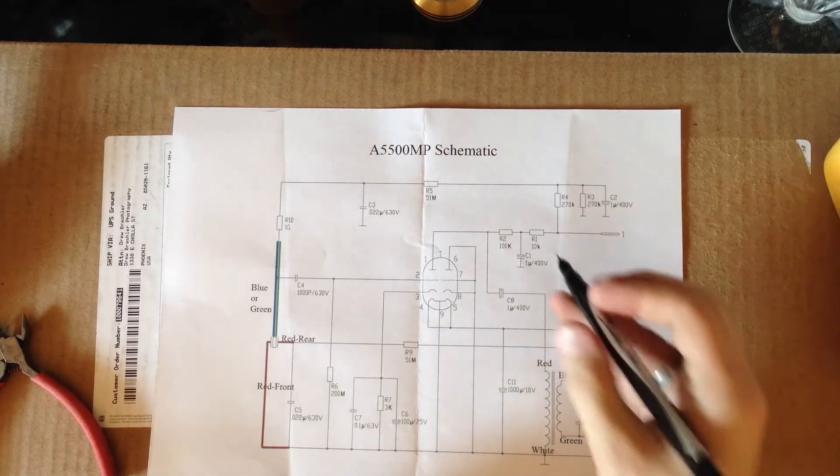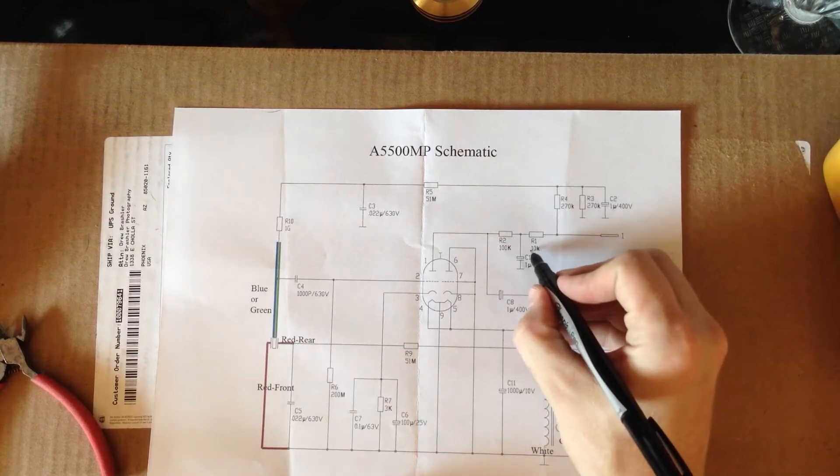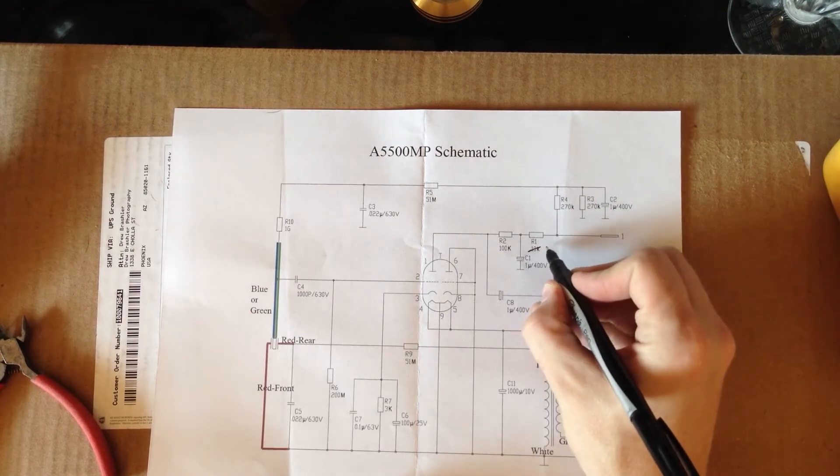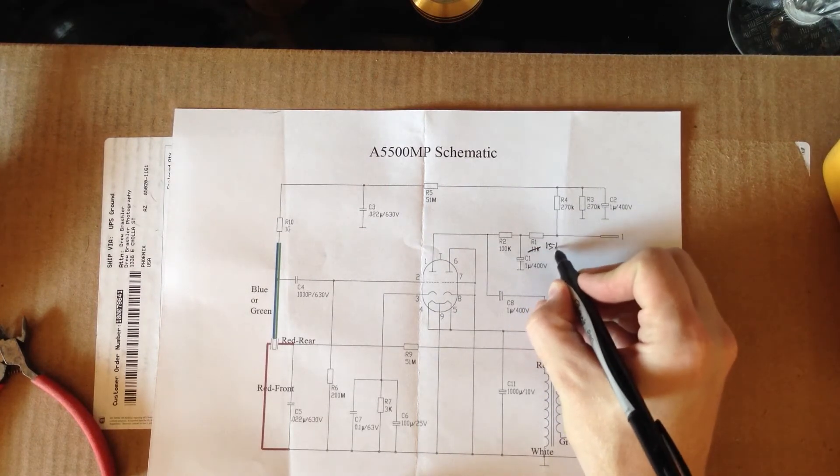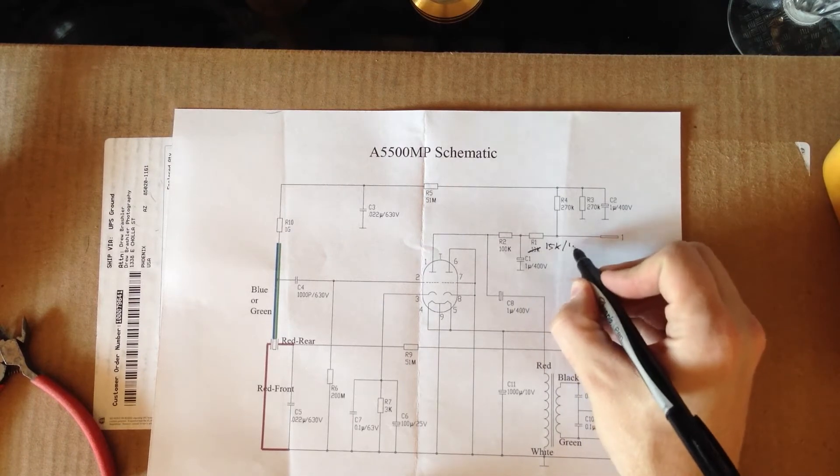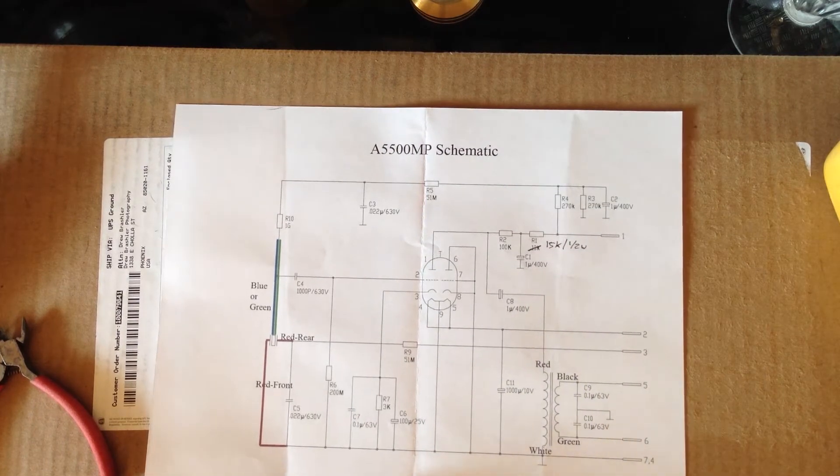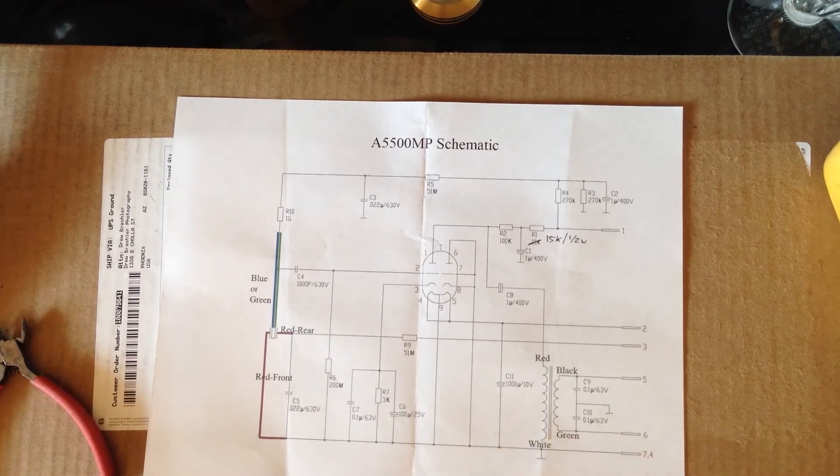So we're going to start over here with R1. Basically this is a 10K resistor. We are going to change this value to be a 15K resistor, and that is a 1.5 watt. So when you go and purchase that, you want to make sure that that's it.